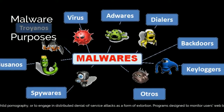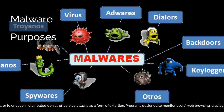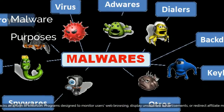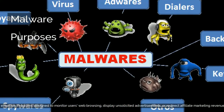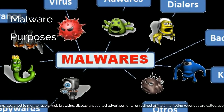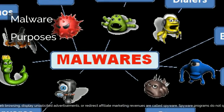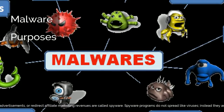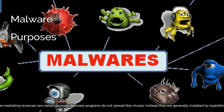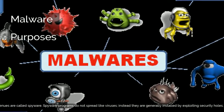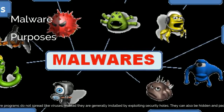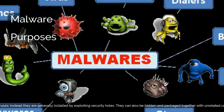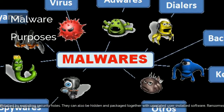Programs designed to monitor users' web browsing, display unsolicited advertisements, or redirect affiliate marketing revenues are called spyware. Spyware programs do not spread like viruses; instead they are generally installed by exploiting security holes. They can also be hidden and packaged together with unrelated user-installed software.